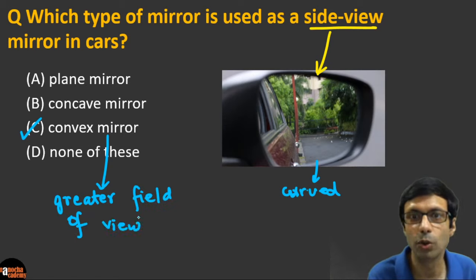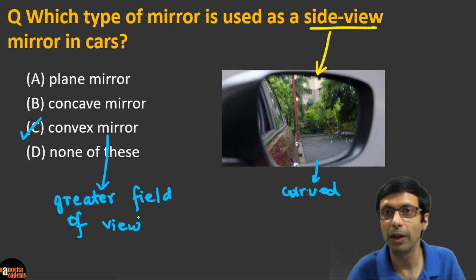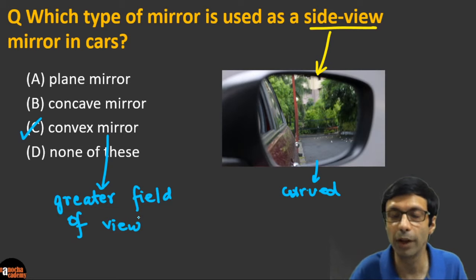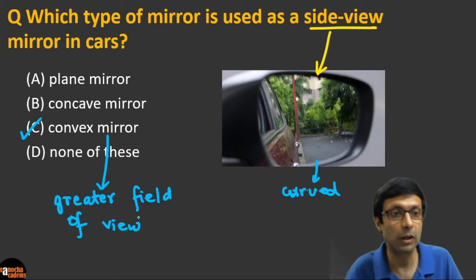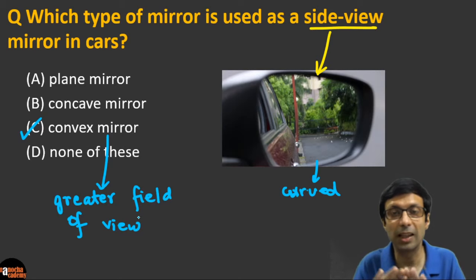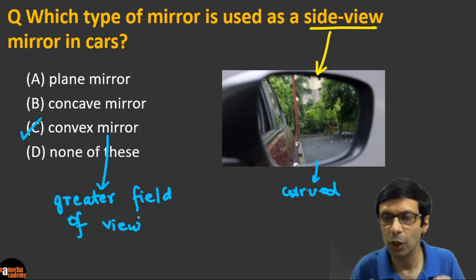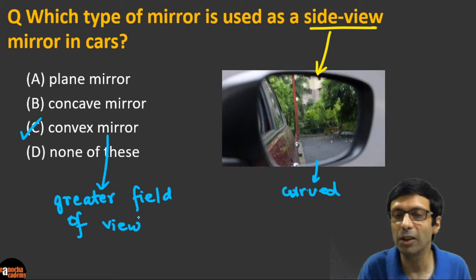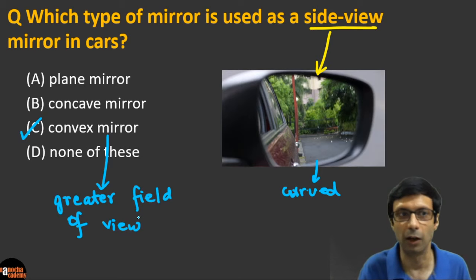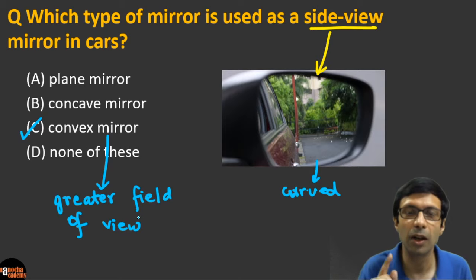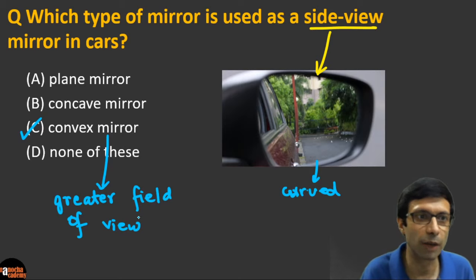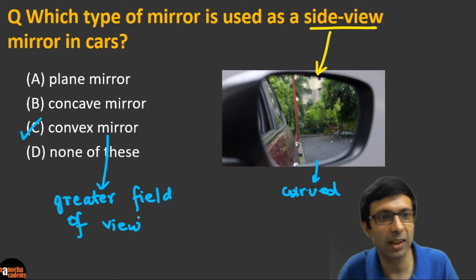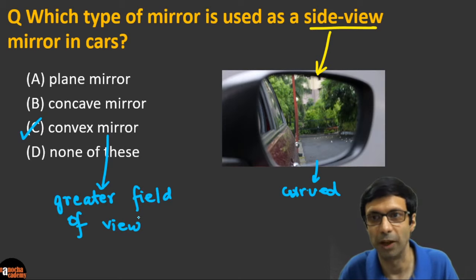The correct answer is (c) a convex mirror, because a convex mirror gives a greater field of view. That's why it's used as a side view mirror in cars, as a rear view mirror, or as a shop security mirror. The only confusing part is that these mirrors look almost flat because they are only slightly curved.